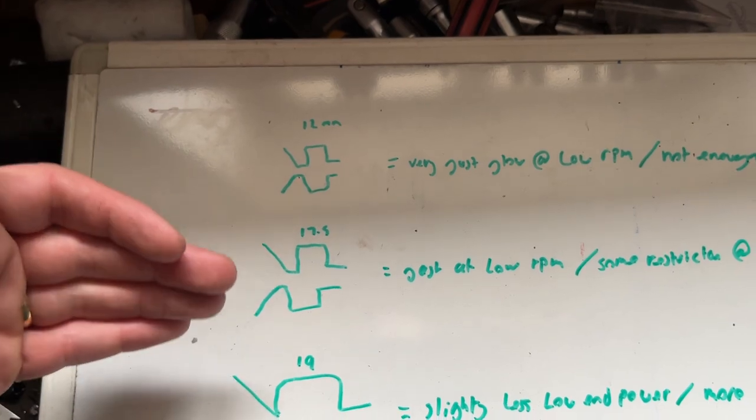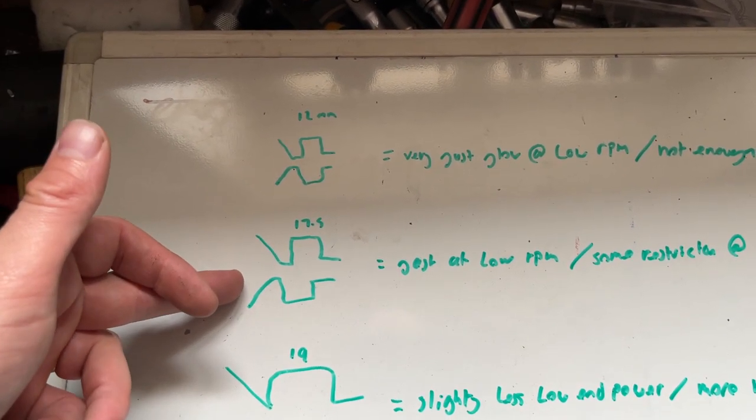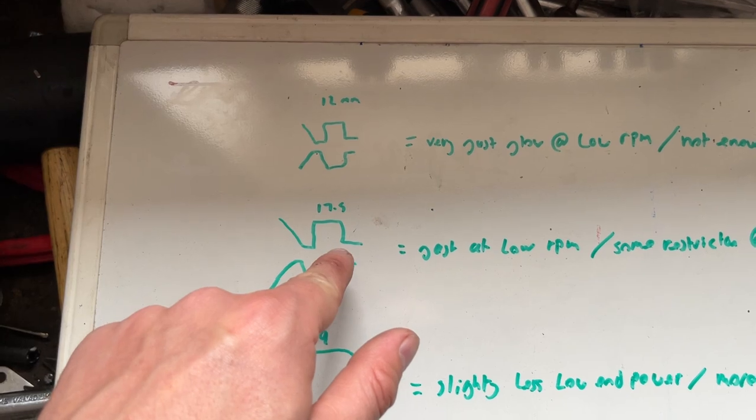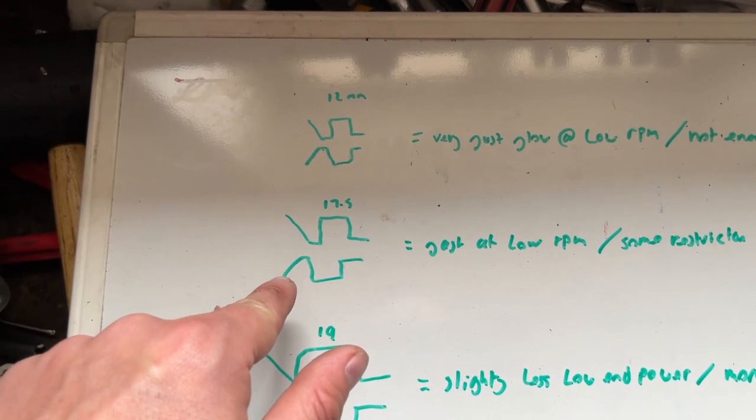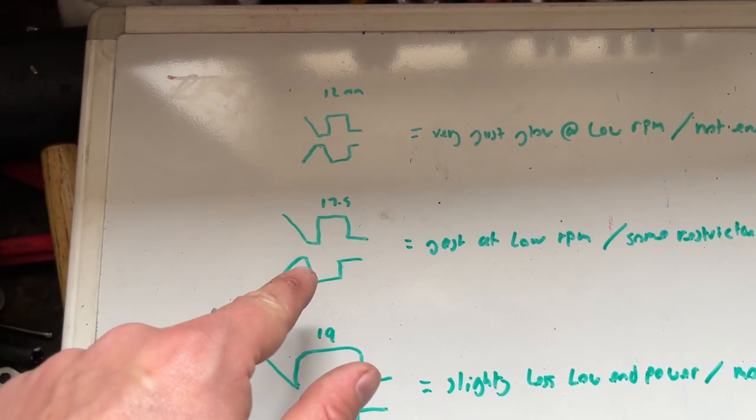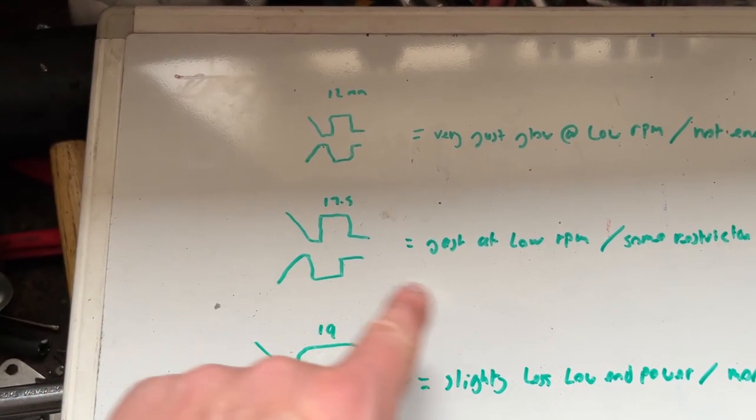With your standard, let's say for example your standard carburetor is 17.5mm, actually a 17.5mm on a 70cc cylinder can be optimal for road tuning, which I'll get onto in a second.